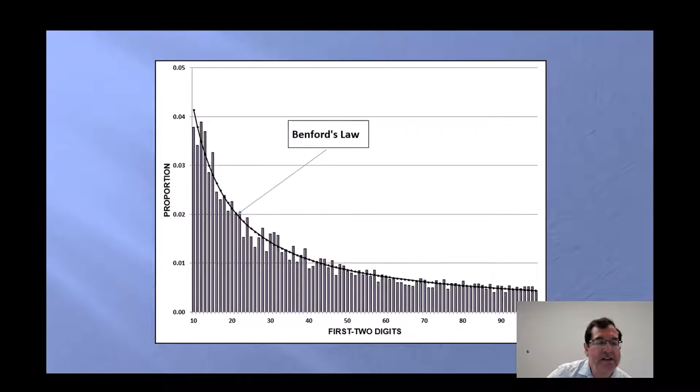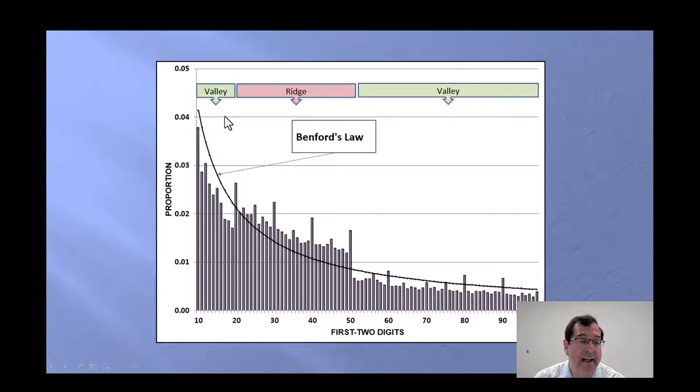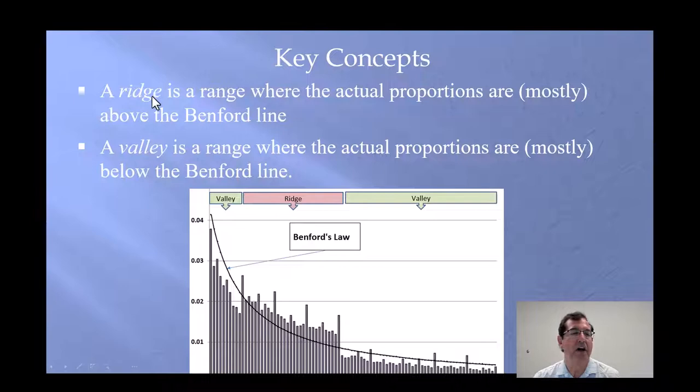This is a random sample of 5,000 numbers from a data set that conforms perfectly to Benford's law. We can see the fit is not perfect, but what I want you to notice is that the unders and overs are randomly distributed around this Benford's law line. I created these words, valley to describe a range where I'm mostly under, ridge to describe a range where I'm mostly over. And so here we have it again. A ridge, actual proportions, mostly over, valley, valley, actual proportions, mostly under.